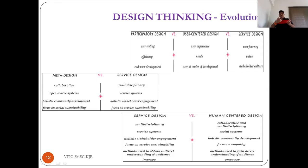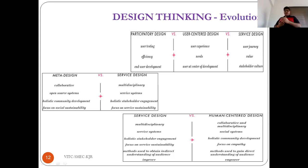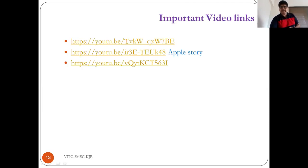Taking the best of both, human-centered design emerged — collaborative and multidisciplinary, focused on social systems and holistic community development, with a focus on empathy. This is the key addition in human-centered design: instruments and methods used to gain direct understanding of the audience and empower them. Previously it was about improving; now it has evolved to empower. To summarize: we've covered design thinking's origin, what made it emerge as a process, its culture of innovation, history, and evolution. In the next class, we will see the five-stage design process.